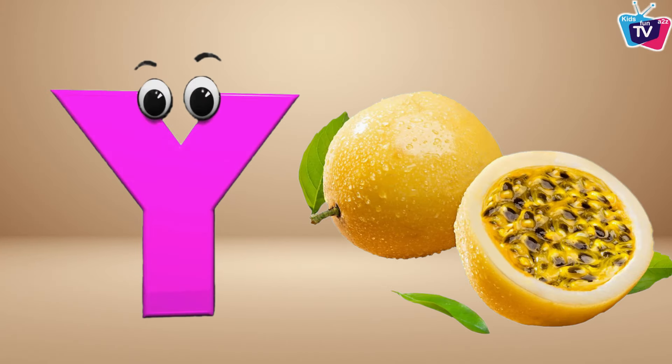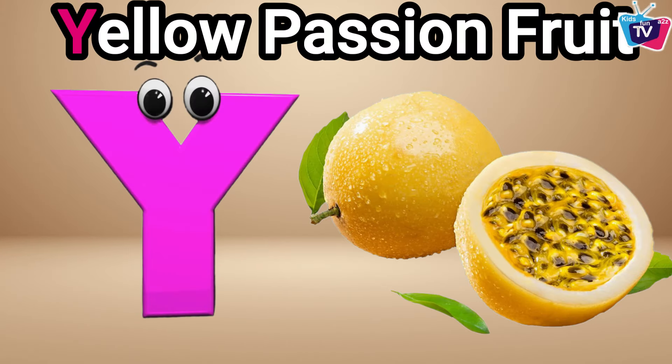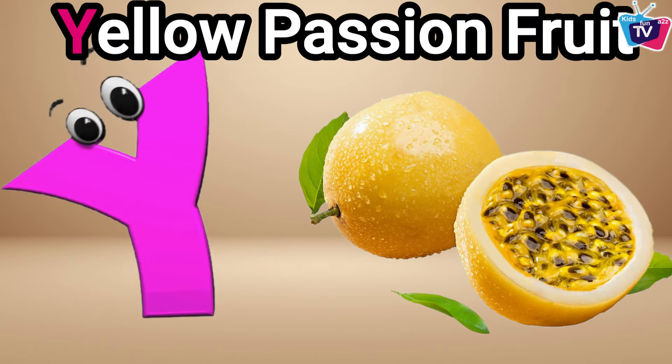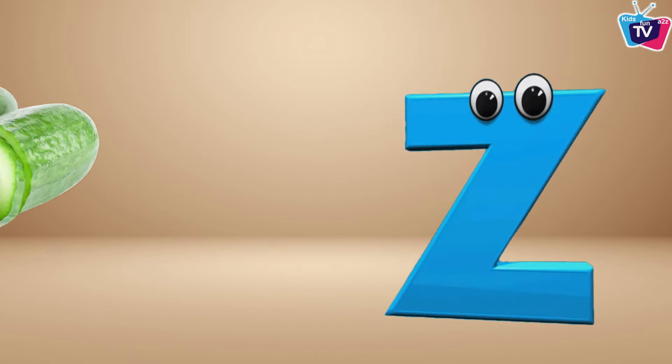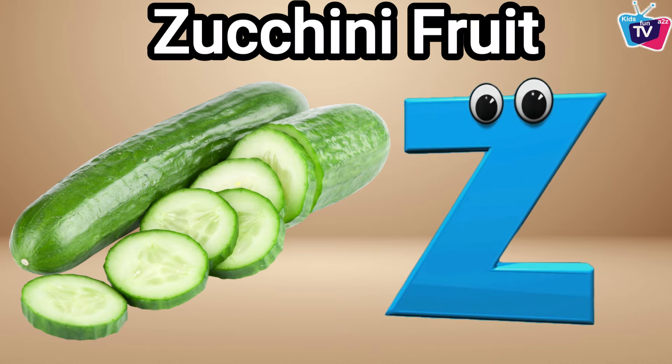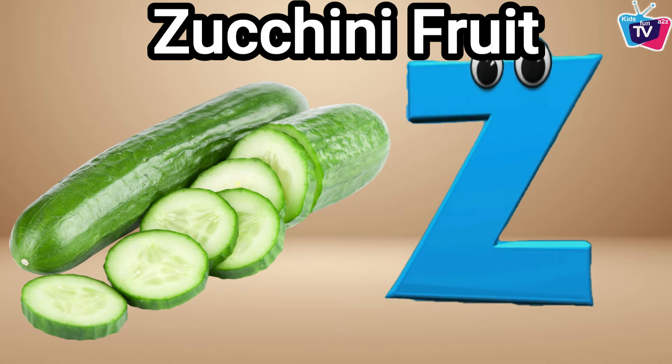Y is for yellow passion fruit, ya-ya-y-yellow passion fruit. Z is for zucchini fruit, z-z-z-zucchini fruit.